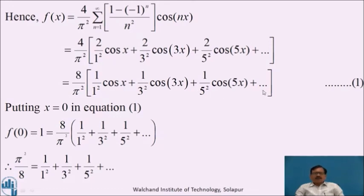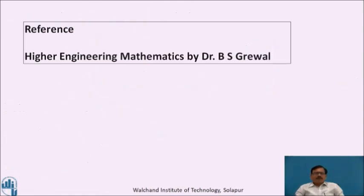To deduce one more result, putting x = 0: f(0) = 1 from the given function, which equals (8/π²)[1/1² + 1/3² + 1/5² + ···], since cos(0) = 1. Therefore, π²/8 = 1/1² + 1/3² + 1/5² + ··· and so on. References: Higher Engineering Mathematics by Dr. B.S. Grewal.